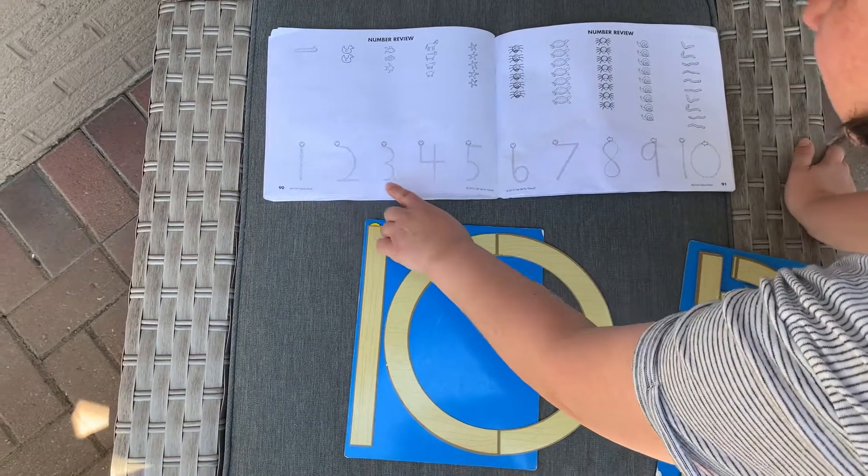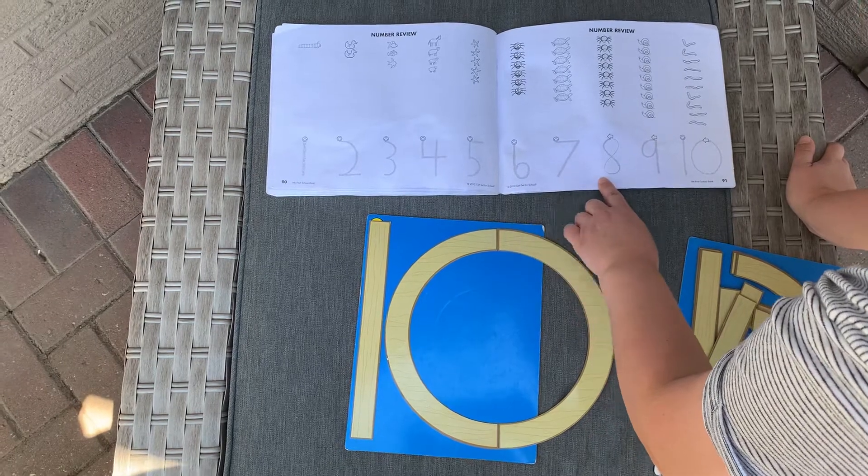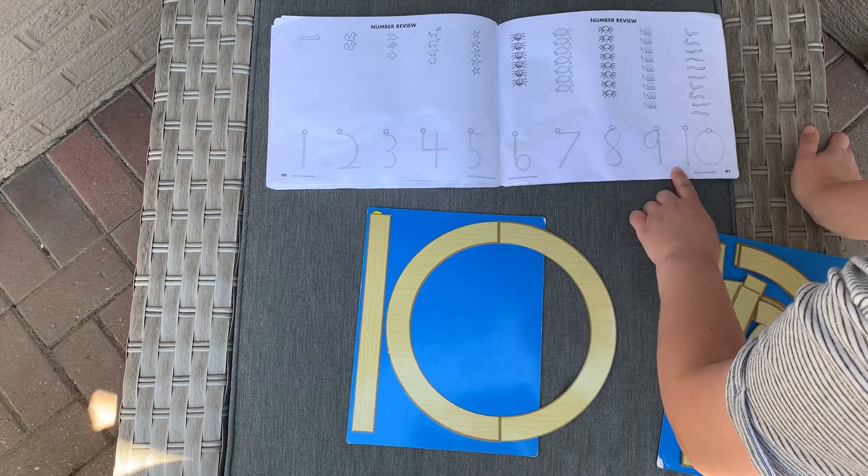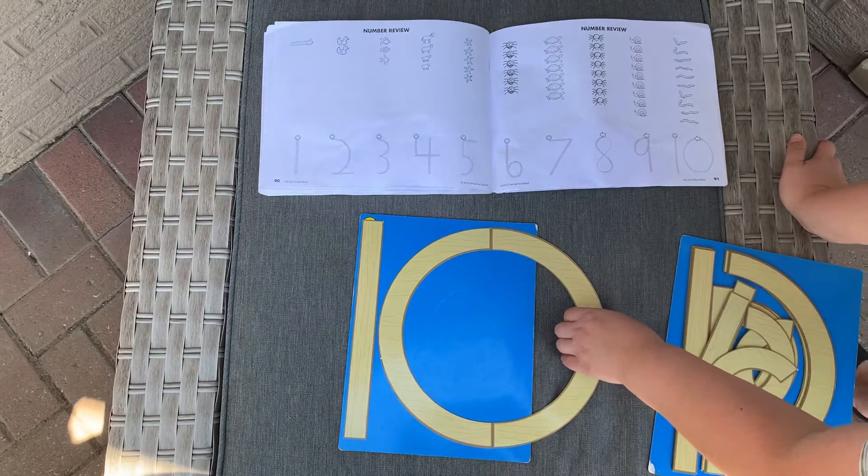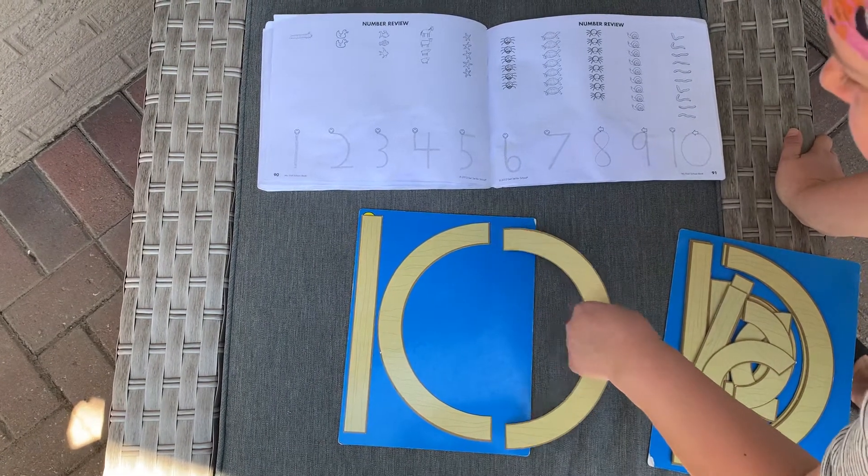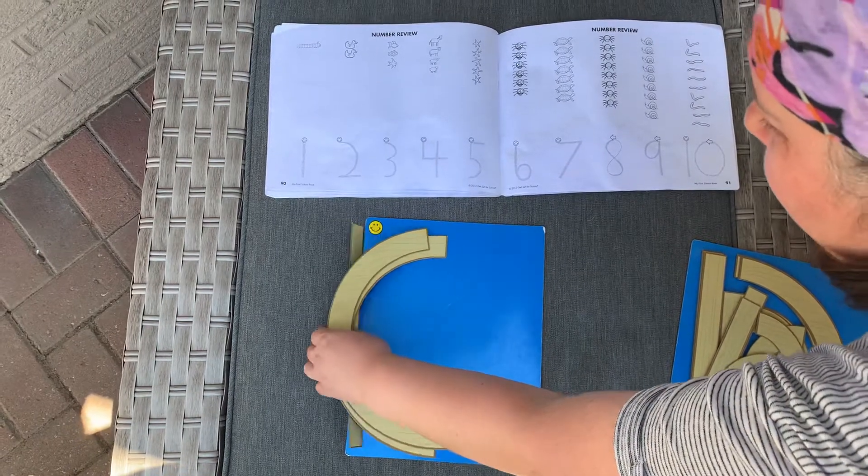One, two, three, four, five, six, seven, eight, nine, ten. You've done it! Now that you know how to make one through ten, you can make all the numbers. Have a wonderful day.